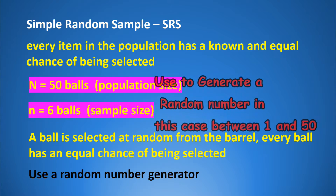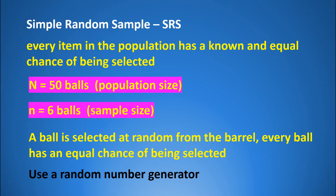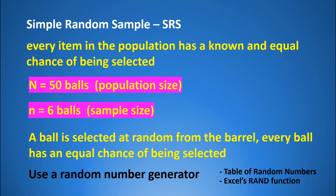You can generate random numbers the old-fashioned way using a table of random numbers, which most statistics books have in the appendix. You can also use a computer program — Excel has a function, RAND, to generate random numbers.